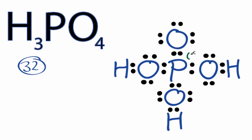Phosphorus has a formal charge of plus 1, and this oxygen here has a formal charge of negative 1. All other atoms have a formal charge of 0.